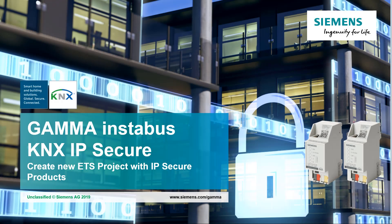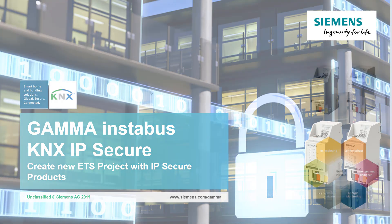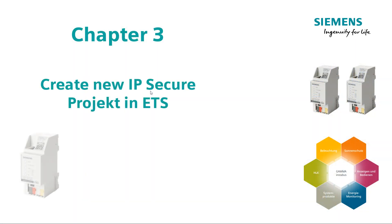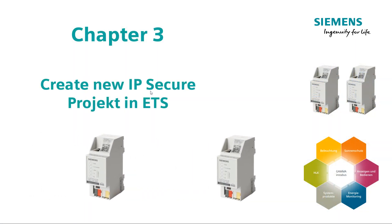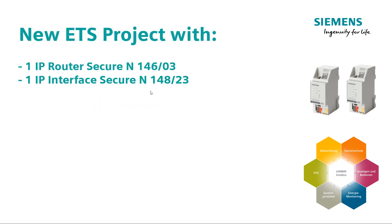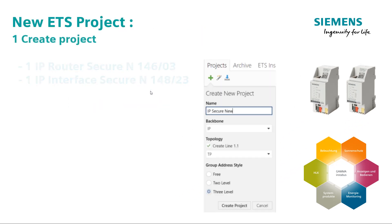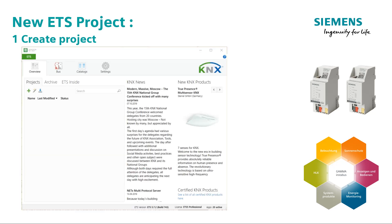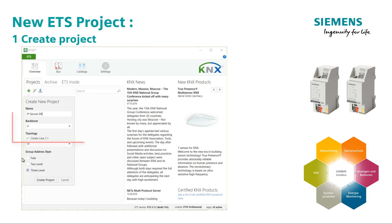We now want to create a new project in ETS that includes an IP router secure and an IP interface secure. To create a new secure ETS project, the following steps are required. First, create the project as usual. Make sure that the backbone medium is set to IP.